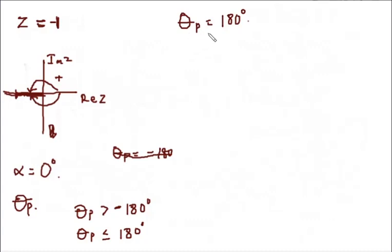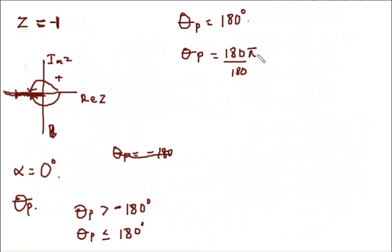To convert to radians, theta_p equals 180 degrees divided by 180 times pi. So 180 divided by 180 is 1, which is equal to pi.